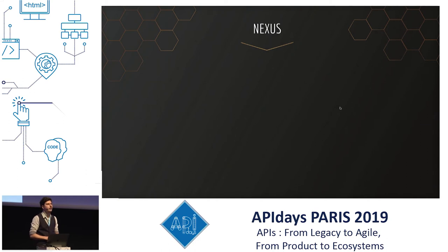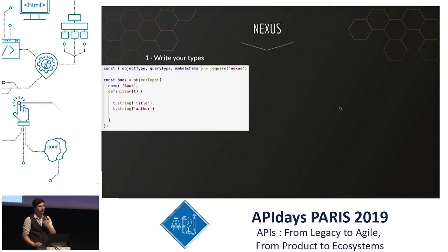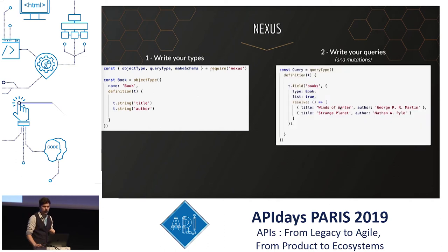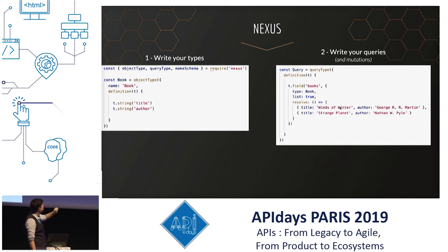Nexus is a library that helps you create a GraphQL schema using this approach. Here is how it works. First, you define your types using TypeScript. We have the book, and we have a definition of title which is a string, and author which is also a string. Then we write the queries — we have books which will return a list of type book. And we also write an array of books: Winds of Winter by George R.R. Martin, maybe one day; Strange Planet by Nathan Pyle.